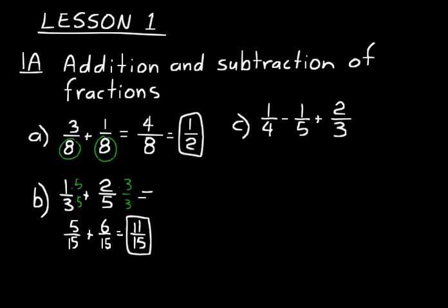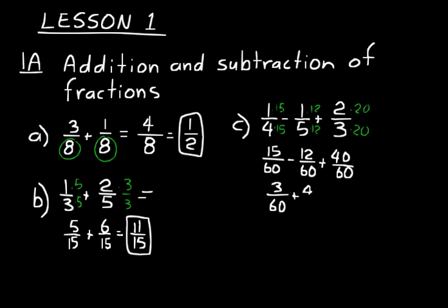60 is the lowest common multiple. We need to multiply all of them by a factor so that we get 60 in the denominator. The first one multiply above and below by 15, the second one above and below by 12, the third one above and below by 20. Let's rewrite this: 15 over 60 minus 12 over 60 plus 40 over 60. Let's work in pairs. 15 minus 12 is 3 over 60, add to that the 40 over 60, and we end up with 43 over 60.